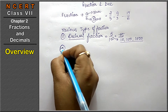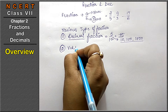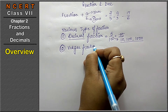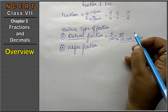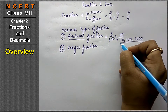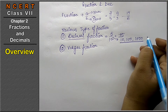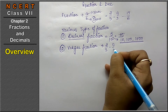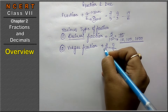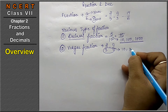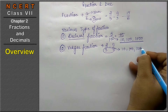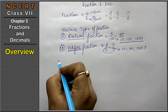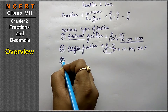The next type is vulgar fraction. In all the fractions we study, there are two types: those whose denominator is a multiple of ten, and those whose denominator is NOT in the form of 10, 100, or 1000 — like 2 upon 3, 3 upon 5. Those fractions whose denominator is not a multiple of ten are called vulgar fractions.